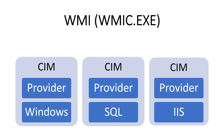In all Microsoft products like Windows, SQL, and IIS, we have one common thing: providers. They all use different kinds of providers, and they use CIM — the Common Information Model — to retrieve information from these providers. At the top we are using WMI to pull the information from these products with the help of these providers.